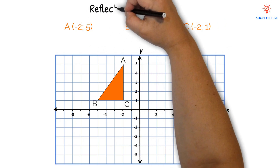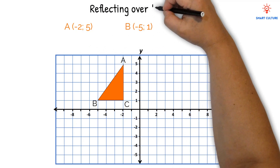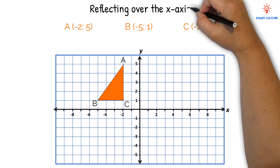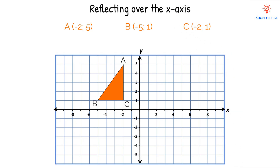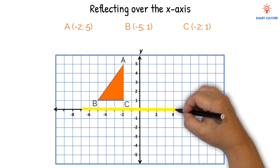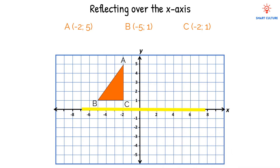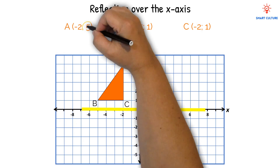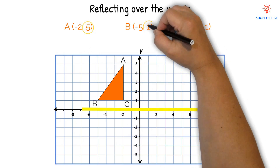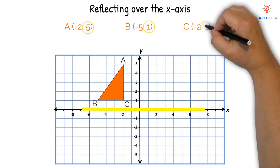Now we will reflect this triangle over the x-axis. When reflecting across the x-axis, the x-values of the original image stay the same because the x-axis is a horizontal line and reflecting doesn't affect the horizontal position. However, the y-values become opposite because the reflection involves a vertical flip.